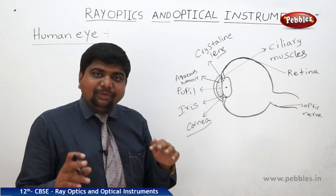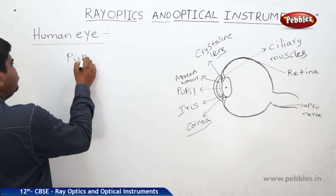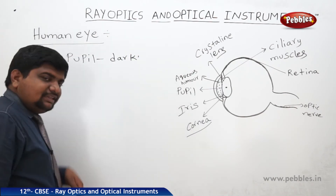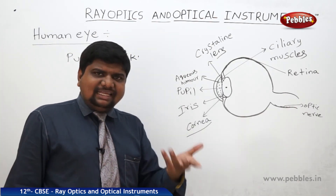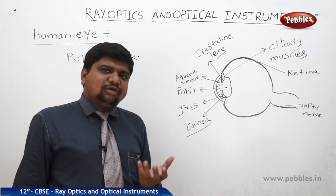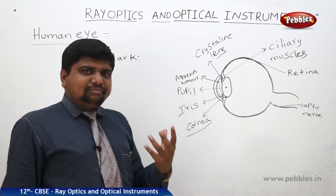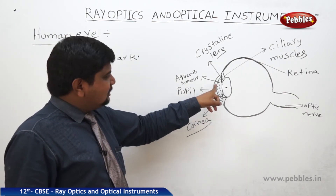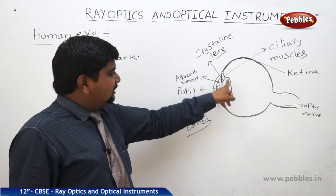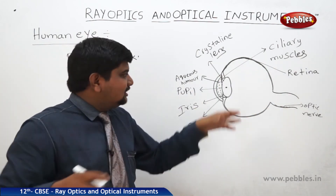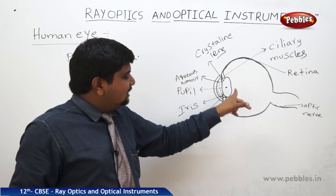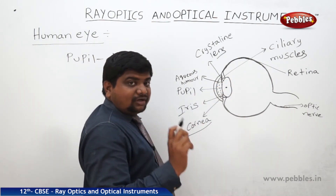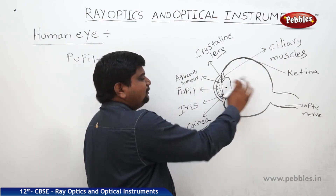Because the pupil appears dark — if there were cones and rods, they might absorb light and produce color — light incident on the curved surface touches the aqueous humor. Because of convergence, it passes through the crystalline lens. The best spot of the crystalline lens is its central spot, the pupil, through which light passes.